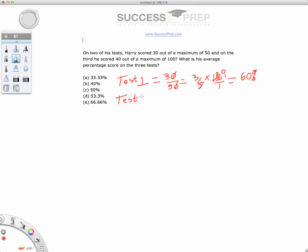Now, because they already told us that test one and two scores were pretty much the same, we know that test two would also be 60%. The last test we need to look at is test three.